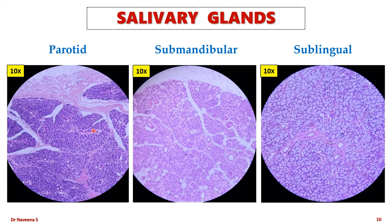Here are the three slides of salivary glands. They share common features except for the following: parotid gland contains serous acini predominantly in its lobules; submandibular gland contains serous acini as well as mucous acini, with mucous acini capped by serous cells known as serous demilunes; whereas sublingual gland contains predominantly mucous acini in its lobules.